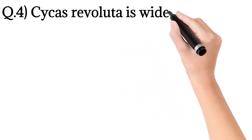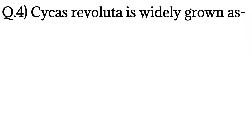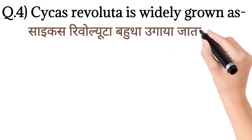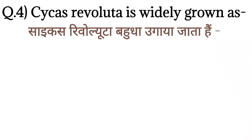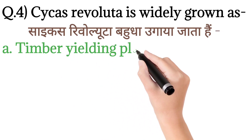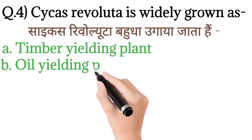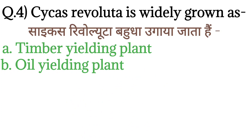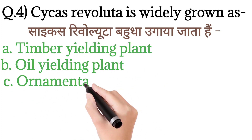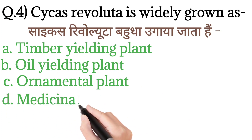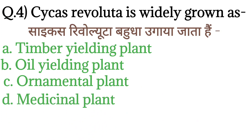Question number 4: Cycas revoluta is widely grown as — Cycas revoluta baudha ugaya jata hai. Iske liye 4 options hain. Option A: Timber yielding plant. Option B: Oil yielding plant. Option C: Ornamental plant. And option D: Medicinal plant.